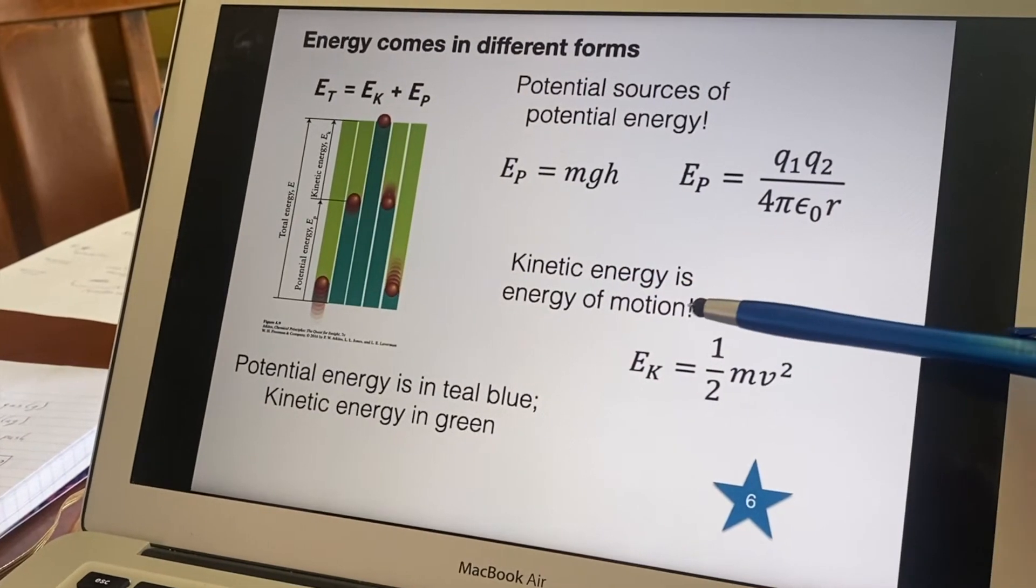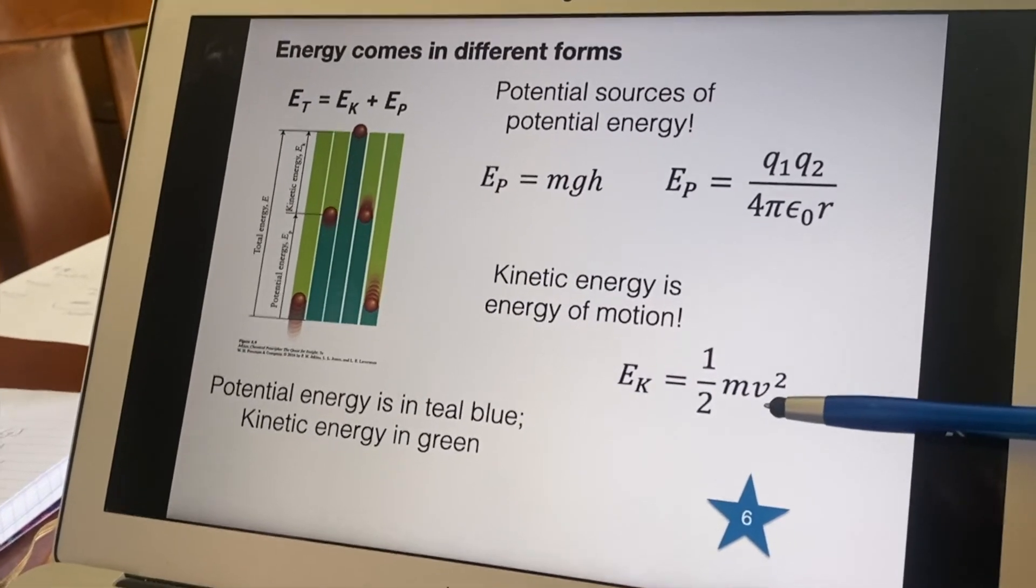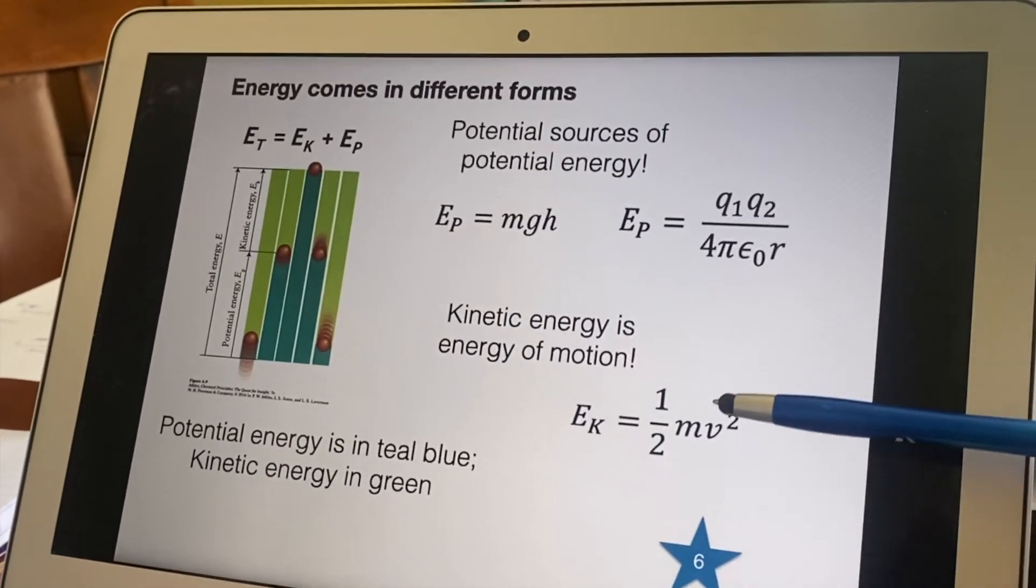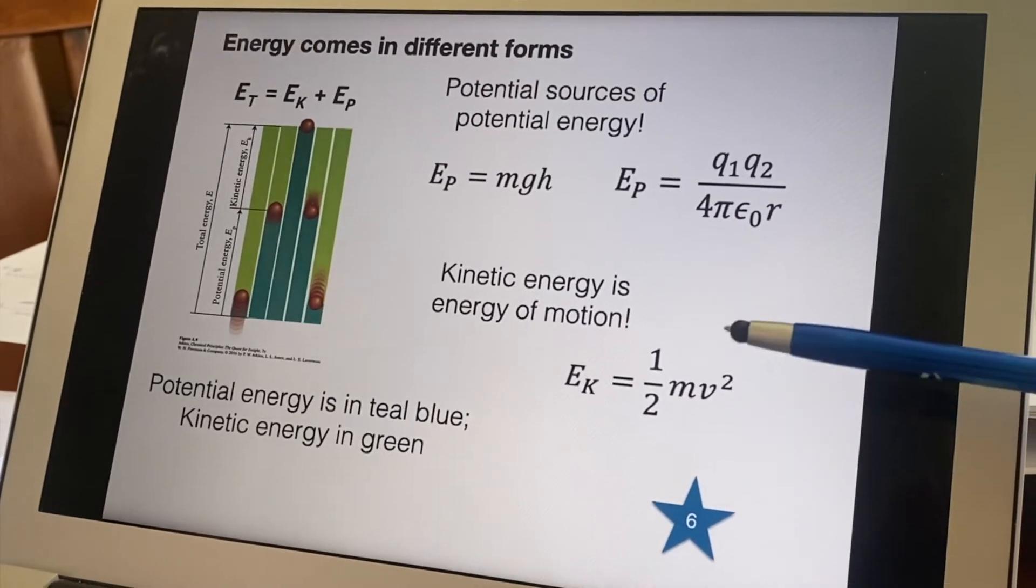Kinetic energy is energy of motion. So if you see this, it says one half mv squared. I've put a v here; your book uses a u here because v gets used for something else, so they don't want to confuse matters, so they confuse matters early instead.